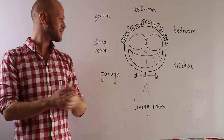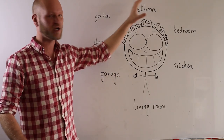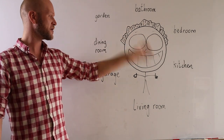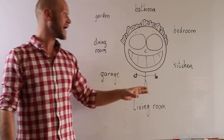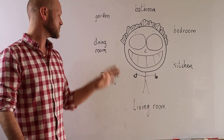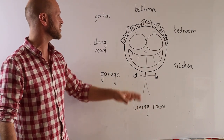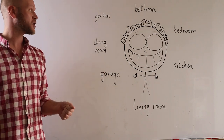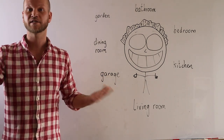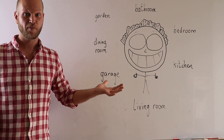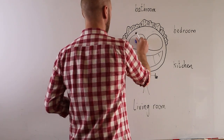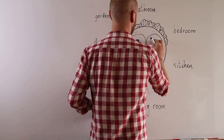So how do you play the game? Draw a big face on the board, and you need two big eyes. You can write any words you want around the face. Today I'm going to show you with rooms in the house. You can use the sentence pattern 'Where is that?' Put two magnets in the eyes, like this.